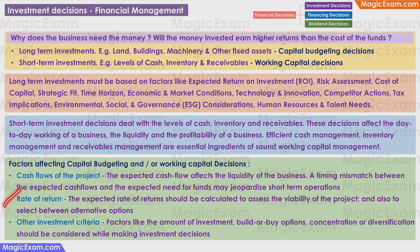Rate of return. The expected rate of returns should be calculated to assess the viability of the project and also to select between alternative options of funding. For example, if you take a loan at 10% per annum interest and invest it in a business that will give you 8% returns per annum, there is a mismatch because you will definitely make a loss. So you should invest in that business only if you can get funds at a rate which is significantly lower than the expected rate of returns.